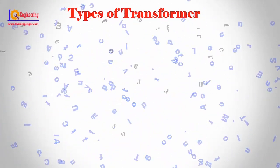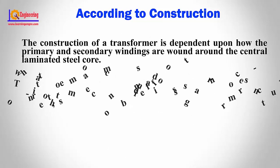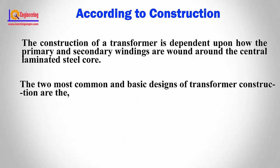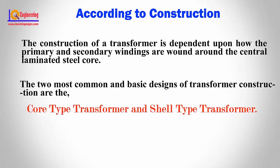According to construction, the construction of a transformer is dependent upon how the primary and secondary windings are wound around the central laminated steel core. The two most common and basic designs of transformer construction are the core type transformer and the shell type transformer.